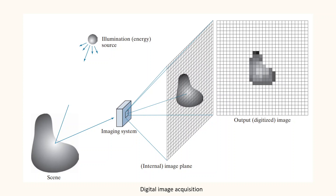This figure represents the procedure of image acquisition. We can see in the figure that the energy from an illumination source is being reflected from a given scene. The imaging system collects the incoming energy and focuses it onto the image plane. The front end of the imaging system is an optical lens that projects the viewed scene onto the focal plane of the lens. The sensor array, which is coincident with the focal plane, produces outputs proportional to the integral of the light received at each sensor. Digital and analog circuitry sweep these outputs and convert them into a digital signal, which is then digitized by another section of the imaging system.